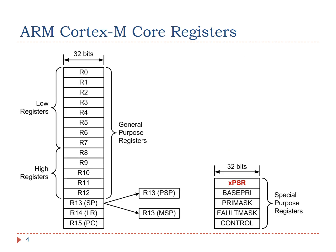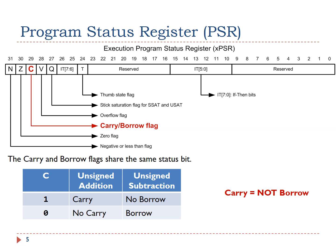ARM Cortex-M microprocessors store the carry flag in one of the special-purpose registers, called the Program Status Register. It is interesting that the carry and borrow flags share the same flag bit in the Program Status Register.